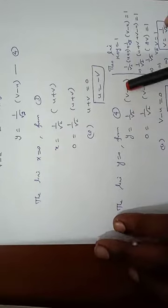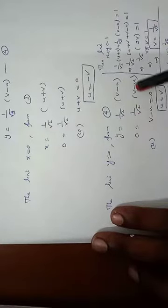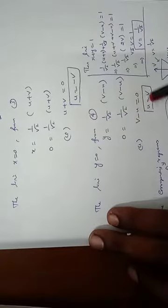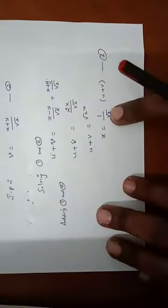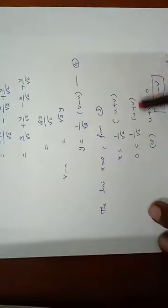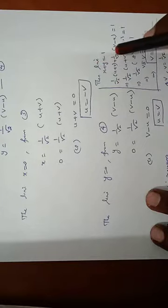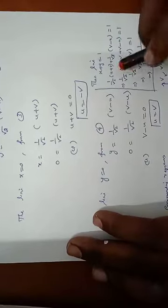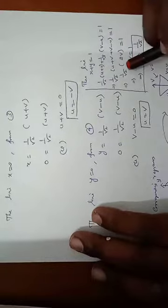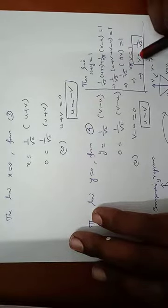Third line: x + y = 1. Substituting x = (1/√2)(u+v) and y = (1/√2)(v−u): (1/√2)(u+v) + (1/√2)(v−u) = 1. This simplifies to (1/√2)(2v) = 1, so √2·v = 1, giving v = 1/√2.